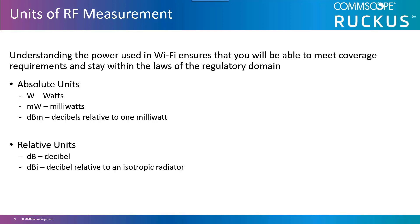dBi is a logarithmic measure of change in power referenced against an isotropic radiator. An isotropic radiator is spherically perfect in its radiation pattern, such as the energy emitted by the sun. Antenna gain is usually measured in dBi.